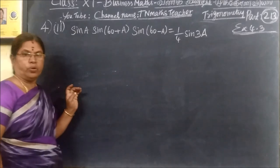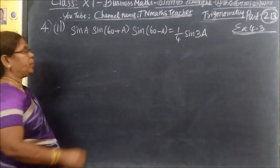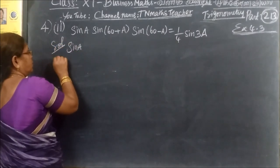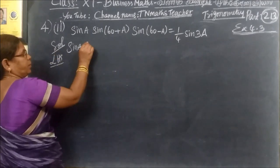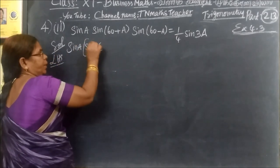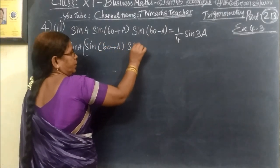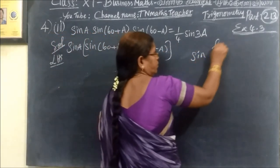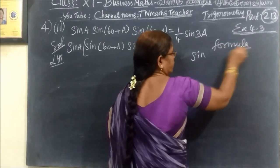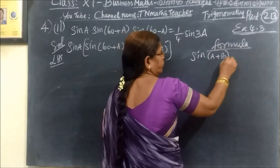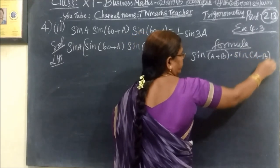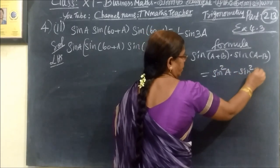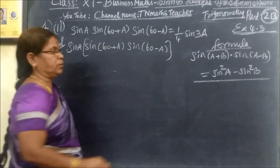Question number 4 is Subdivision 2, exercise 4.3, part 1. We will consider LHS. So LHS is Sin A. We will use this formula within brackets: Sin(A+B) · Sin(A−B) equals Sin²A minus Sin²B. This is an important formula.